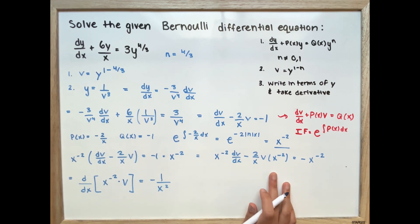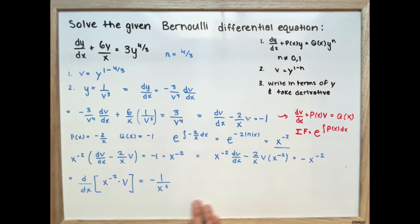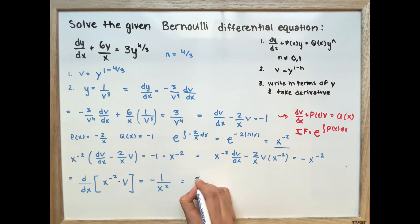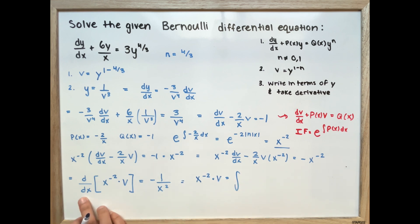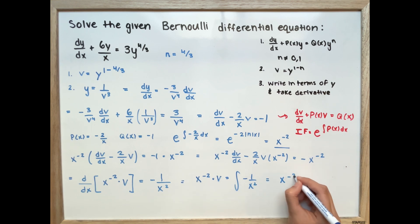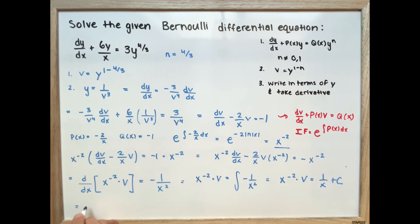The left side is the derivative of the product x^(-2) times v. Integrating both sides, x^(-2) times v equals the integral of negative x^(-2) dx, giving us 1 over x plus c. Rearranging, v equals x plus c times x squared.